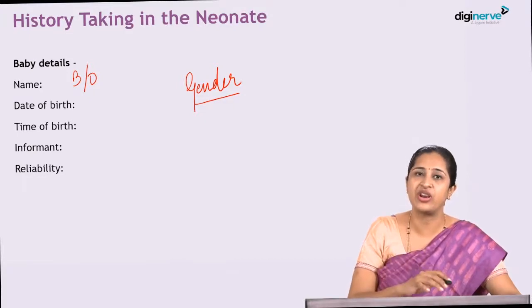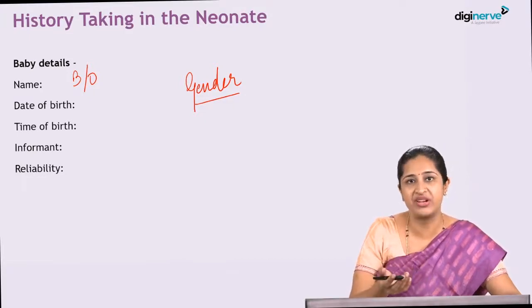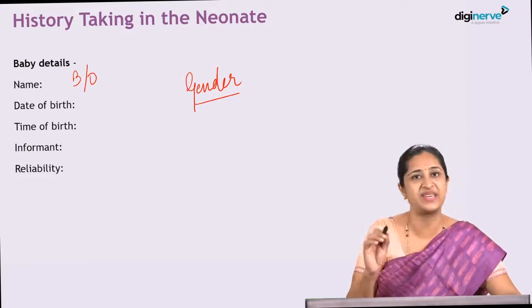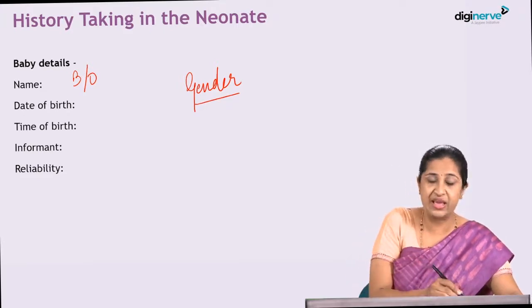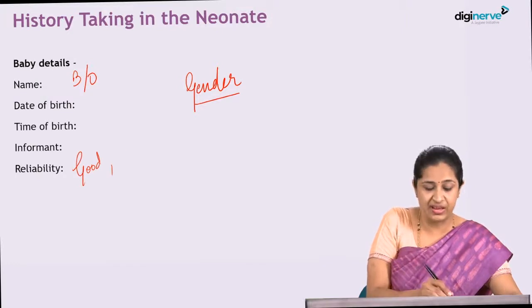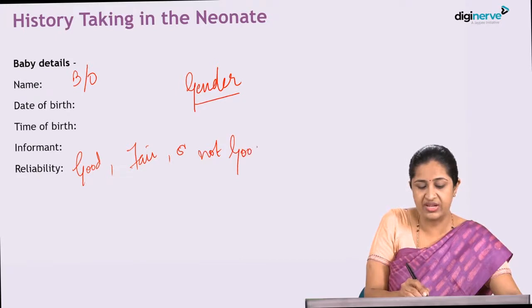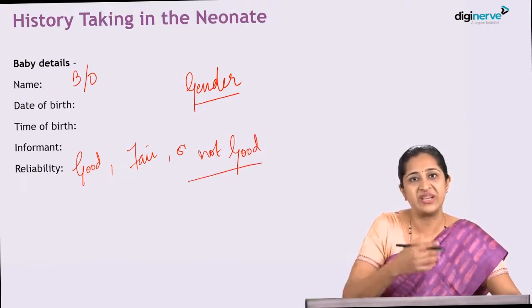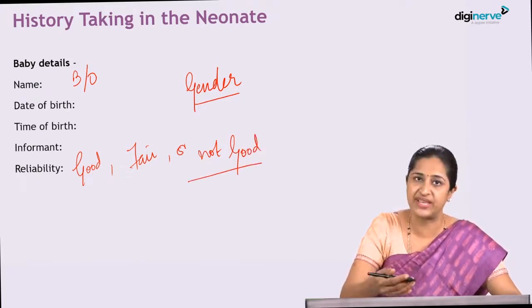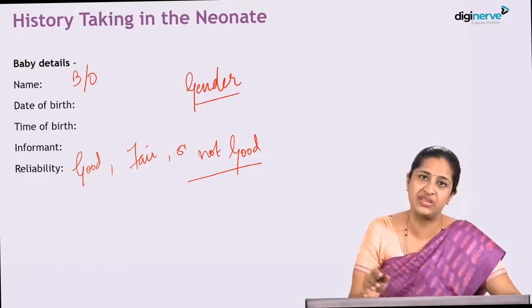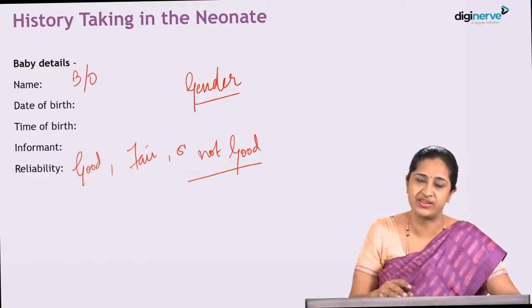In the exam, if you are asked the reliability of history, it is important that if the informant is the one who has been caring for the baby, the reliability is good. Otherwise, you will say the reliability is fair or not good. Reliability is not good if the bystander has only just arrived and has no idea what has happened to the baby in the last 24 to 48 hours.